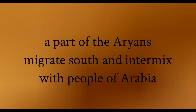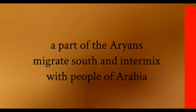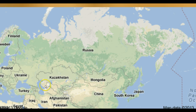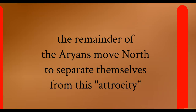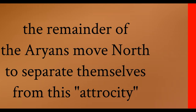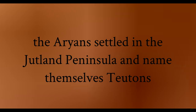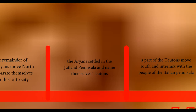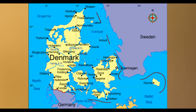These Aryans had a belief from the very beginning that they are superior and should not mix. A group of Aryans broke off, moved south, and mixed with the peoples of Arabia. The remaining Aryans saw this as an atrocity, and to separate themselves completely, they moved north and settled in what is known as the Jutland Peninsula, changing their names to the Teutons — today, the Denmark-Sweden region.